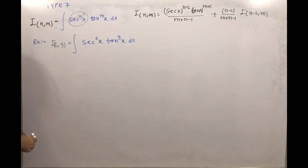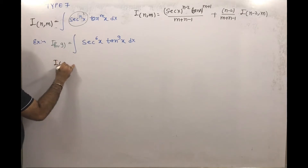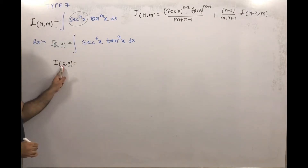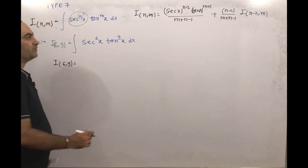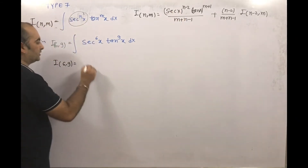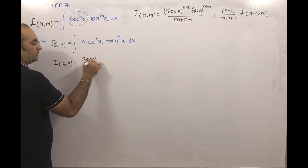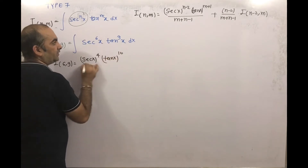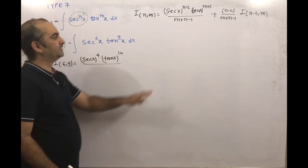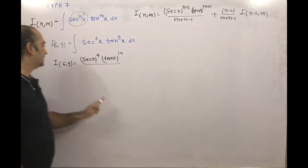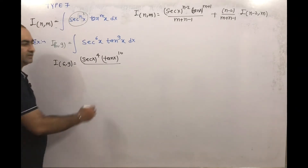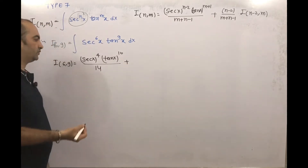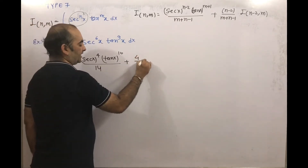So I(6, 9) — here n is 6 and m is 9. What will come here: sec x to the power 4 into tan x to the power 10, divided by n plus m minus 1, that means 6 plus 9 is 15 minus 1 is 14, plus n minus 2 that is 4, divided by 14.